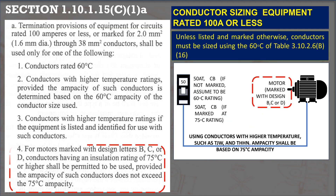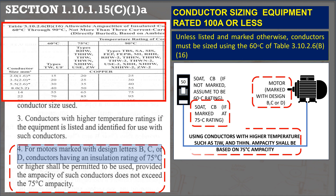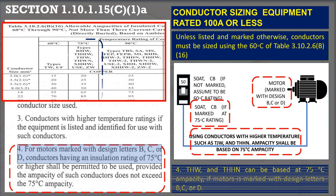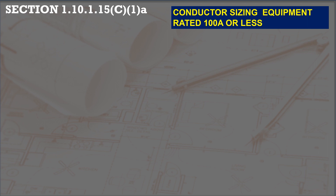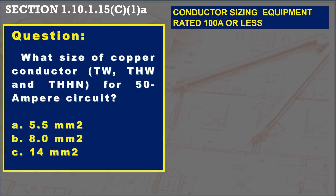When a motor is marked with design letters B, C, or D, the equipment terminal rating is considered to be 75 degrees Celsius. And if the circuit breaker is also marked at 75 degrees Celsius, conductors can be sized based on the 75 degrees Celsius column of the ampacity table.